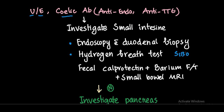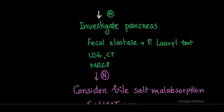One differential for small intestinal malabsorption is Crohn's disease. To see active inflammation, we do fecal calprotectin. We can also do a barium follow-through to look for any strictures. The best test to evaluate small bowel Crohn's disease is small bowel MRI, also known as MRI enterography.